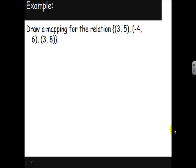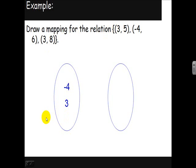In this example we're going to draw a mapping diagram or a mapping for the relation (3,5), (-4,6), and (3,8). So to do this we're going to create two regions. One region will hold the domain values, that'll be on the left. One region will hold the range values, that'll be on the right. So the domain is just -4 and 3. Notice the 3 is repeated here - we have (3,5) and (3,8), so we only show the 3 once in the mapping diagram. The range: we have 5, 6, and 8.